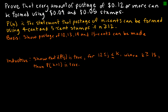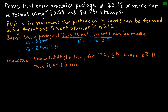Now let's take a look at the same proof using strong induction. Strong induction says instead of just using one basis step, let's look at up to a certain point k. So I'm going to show that I can make postage of 12 cents using three four-cent stamps; 13 cents using two four-cent stamps and one five-cent stamp; 14 cents using one four-cent stamp and two five-cent stamps; and 15 cents using three five-cent stamps. So I've shown it up to 15.